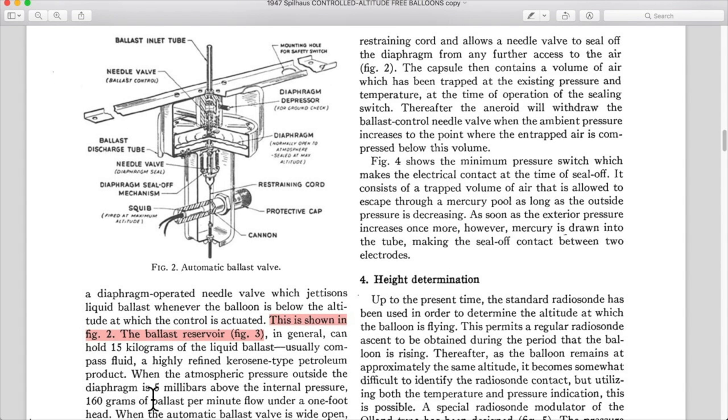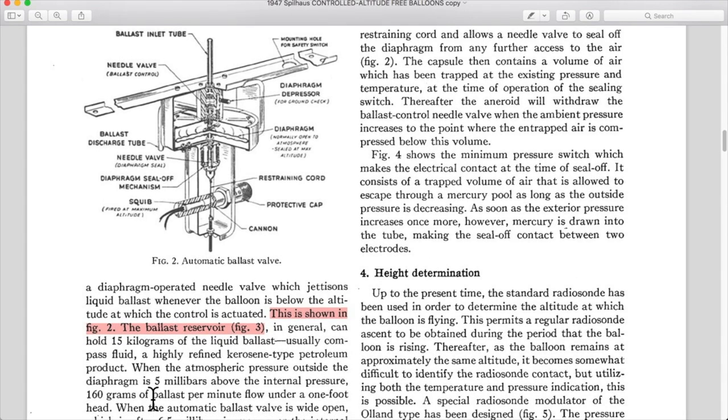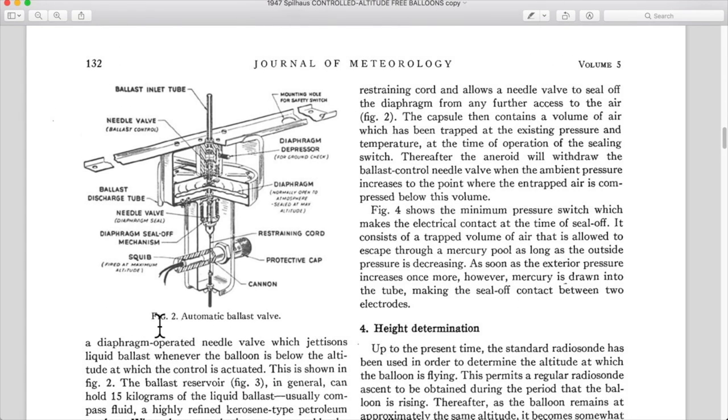When the atmospheric pressure outside the diaphragm is five millibars above the internal pressure, 160 grams of ballast per minute flow under a one foot head. Okay, let's go back here and take a look at this.